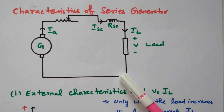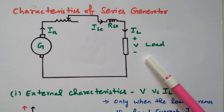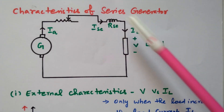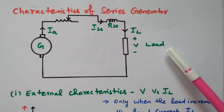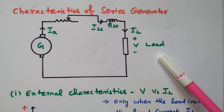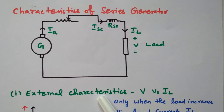Now we will see the characteristics. There are three different characteristics available: no-load characteristics, external characteristics, and internal characteristics. But in a series generator it is always started with the load, so there are no no-load characteristics available. Only external characteristics are directly available.